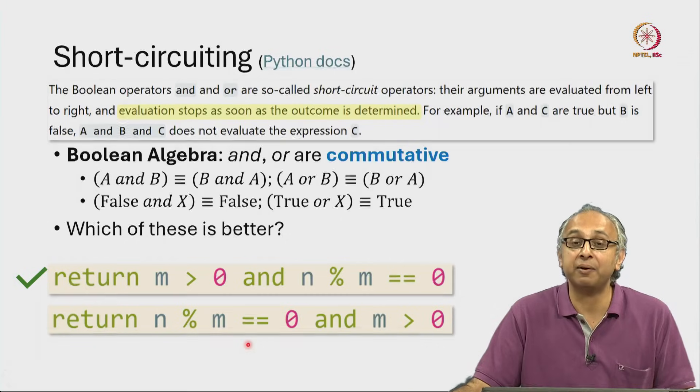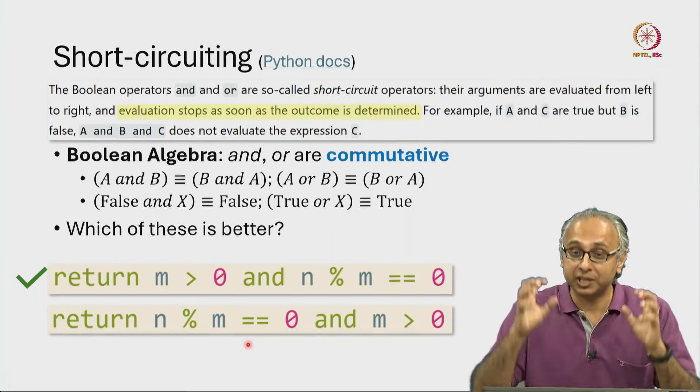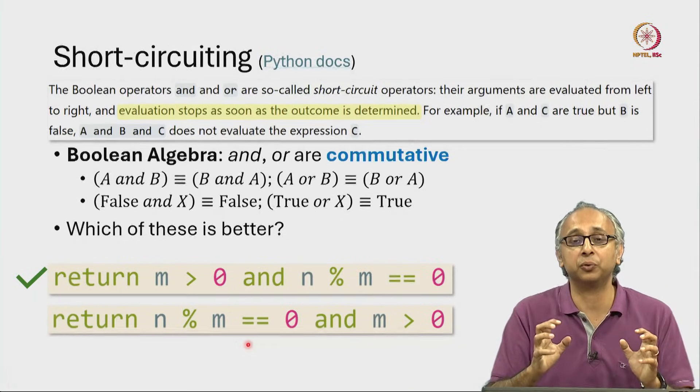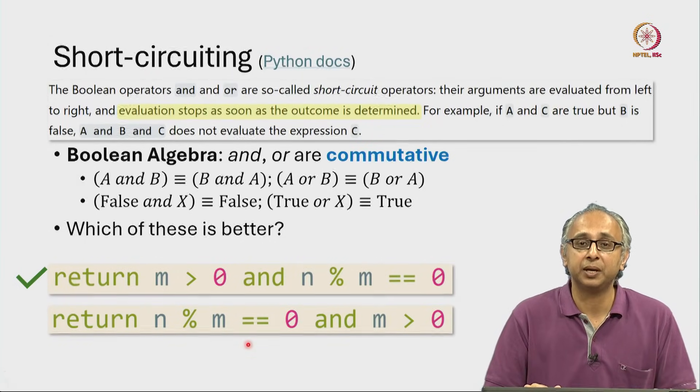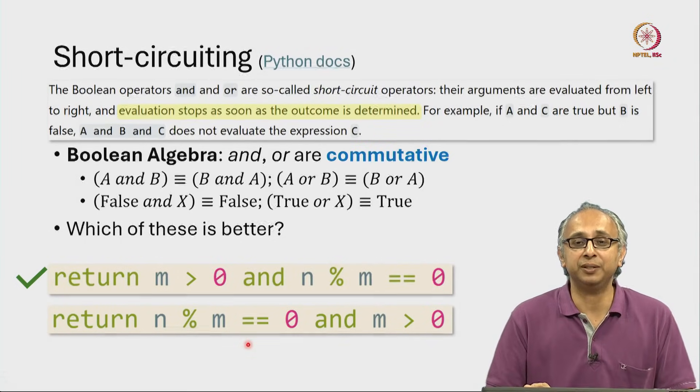This already produces an error. It does not produce a true or a false, it actually crashes the code. Your program will stop and you will get the divide by zero error message. So there is a big difference between these two.